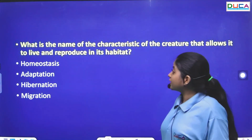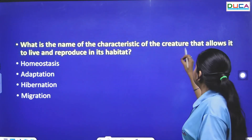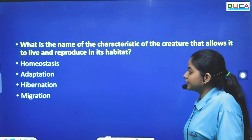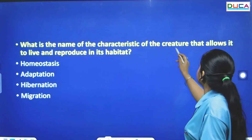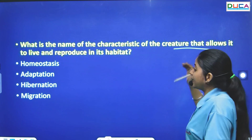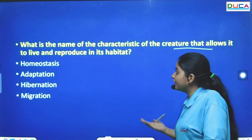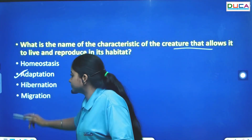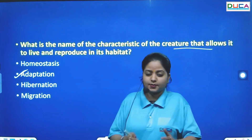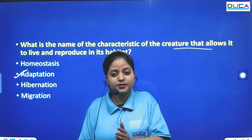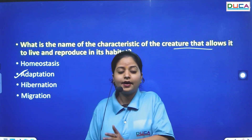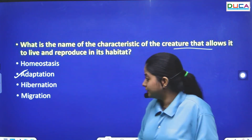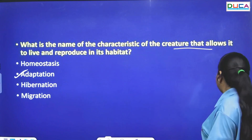The next question: What is the name of the characteristic that allows a creature to live and reproduce in its habitat? When an organism can live and reproduce in a particular habitat, we call that characteristic adaptation.